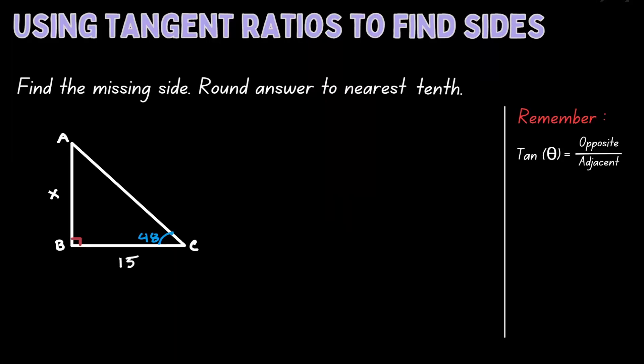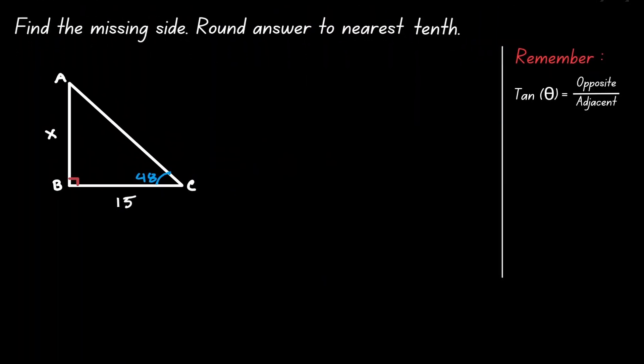Welcome. Let's use the tangent ratio to find sides in a right triangle. Given the triangle on the left, we want to find the measurement of side AB. We always want to start by identifying the reference angle, which in this case is angle C — that is the angle that we have information on.